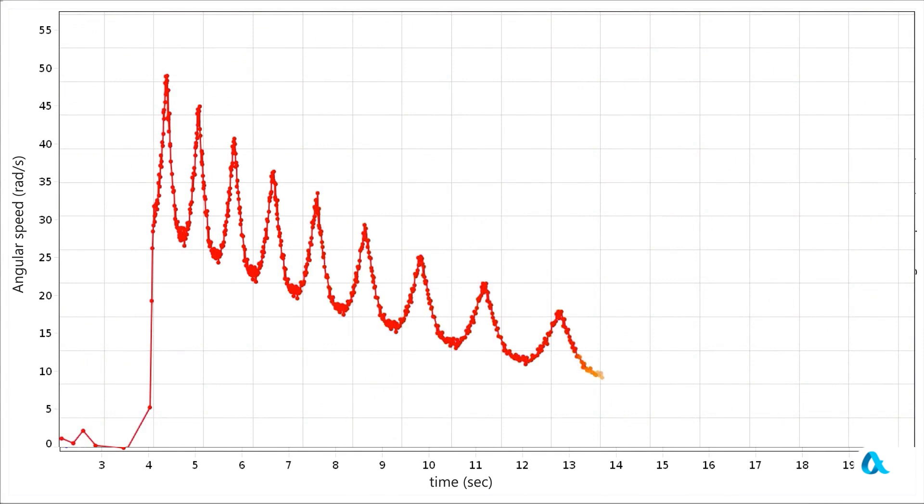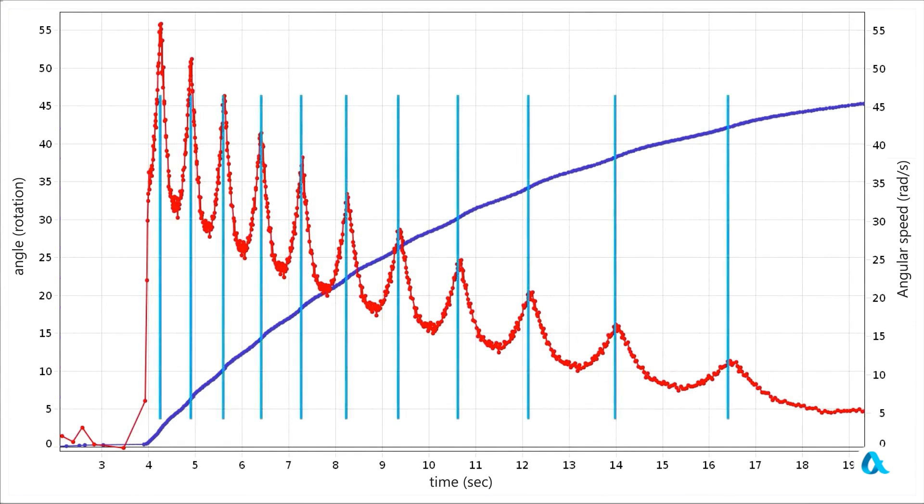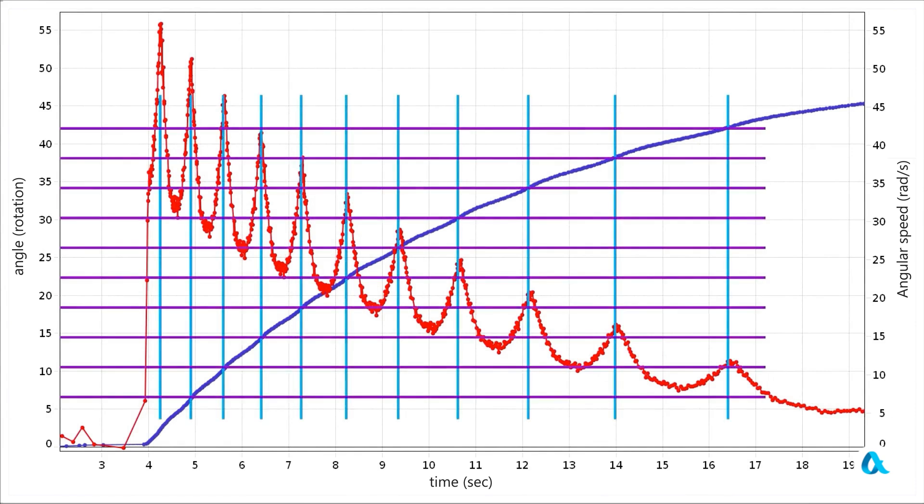On the graph of angular velocity, we see that the rotation of the carrier occurs unevenly. Of course, there is a general slowdown due to energy losses, but against this background, there are strong pulsations. During one period of such pulsations, the angular velocity changes by almost two times. And if we add the angle graph here, it becomes clear that each such pulsation occurs over four revolutions of the carrier, i.e., during one return of the eccentrics to the central gear.